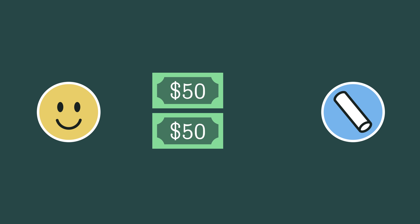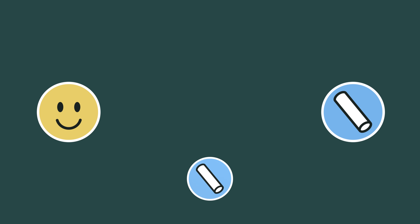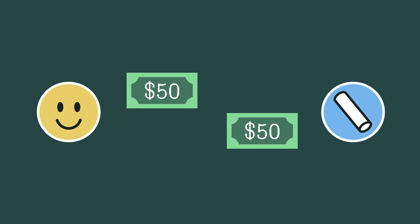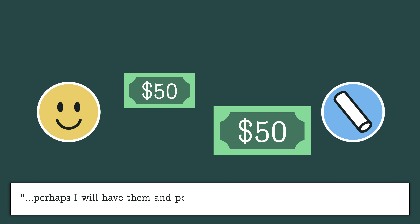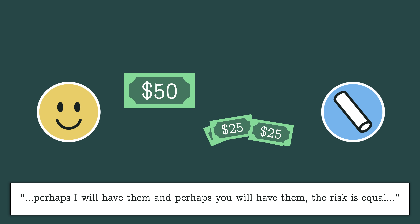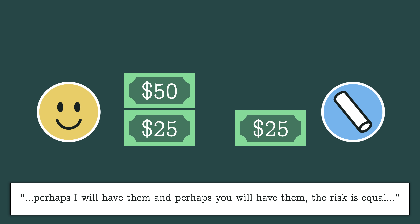Pascal reaches the same conclusion, but he looks just one round into the future. On the next coin flip, either you win and get all $100, or we tie — and if we stop then, we should split the money 50-50. Therefore, he argues, either way these $50 belong to you. And these other $50 — perhaps I will have them, and perhaps you will have them; the risk is equal. In other words, we're equally likely to win those $50, so we should split them: $25 for each of us, which gives you $75 and me $25.